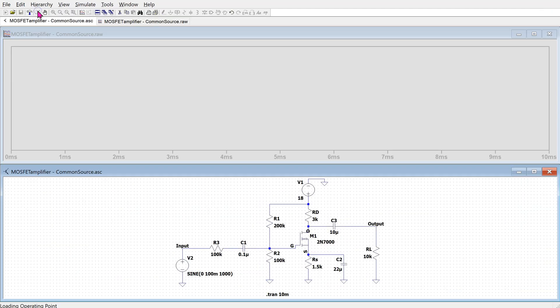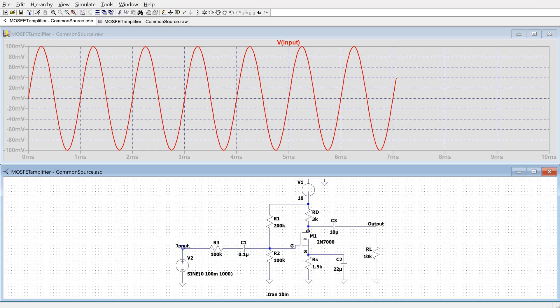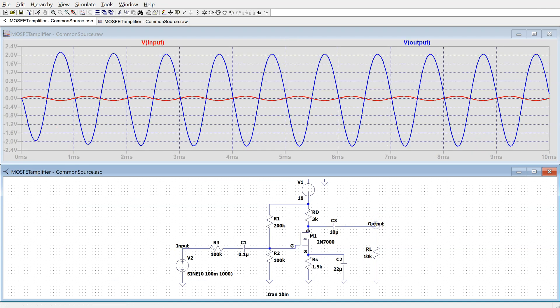When we simulate and look at the input and the output, we can see that the output voltage has a peak of around 2 volts. Hence, this circuit is providing a gain of about minus 20, since the output is 180 degrees out of phase with the input.